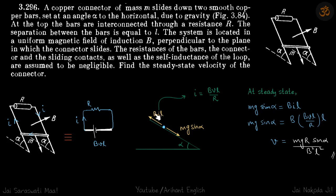The current I can be obtained from here: it should be BVL/R. At steady state, Mg sin α equals BIL. Substituting the value of I here, you will get the steady state velocity.